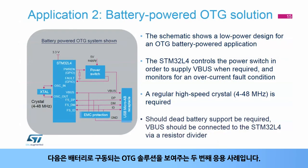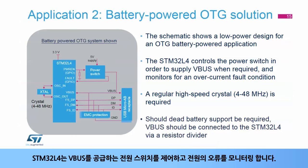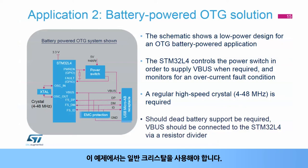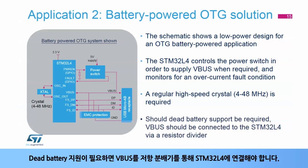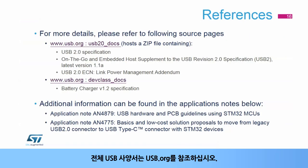Here is a second application example showing a battery-powered OTG solution. The STM32L4 controls a power switch supplying V-Bus to the receptacle and monitors for faults on the supply. In this example, a regular crystal oscillator should be used. Should dead battery support be required, V-Bus should be connected to the STM32L4 via a resistor divider.